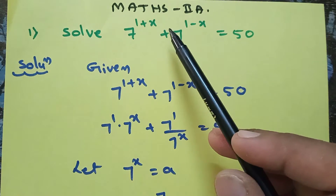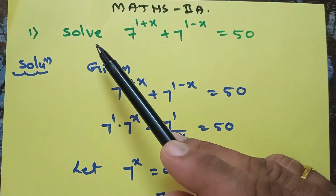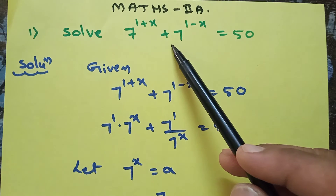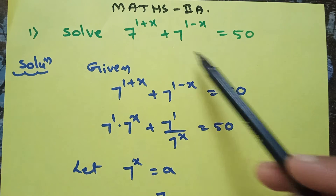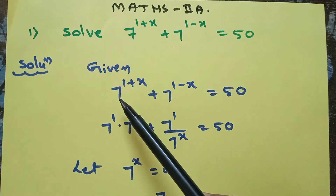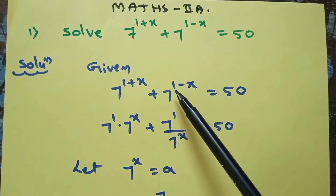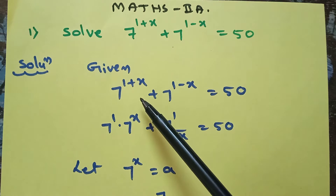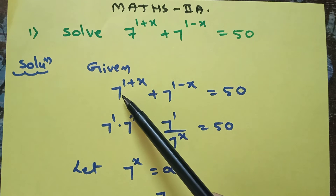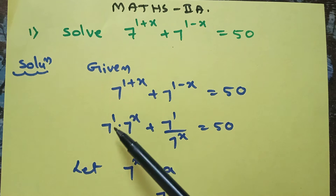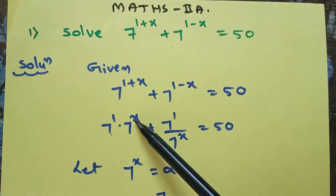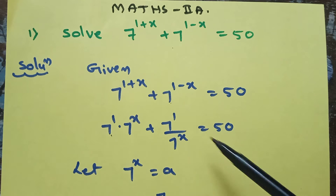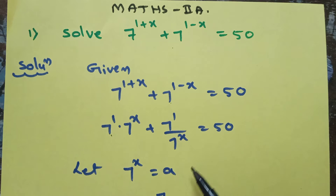This question is to solve 7 power (1+x) plus 7 power (1-x) is equal to 50. Using laws of exponents, we can write 7 power (1+x) as 7 power 1 into 7 power x, and 7 power (1-x) as 7 power 1 divided by 7 power x.